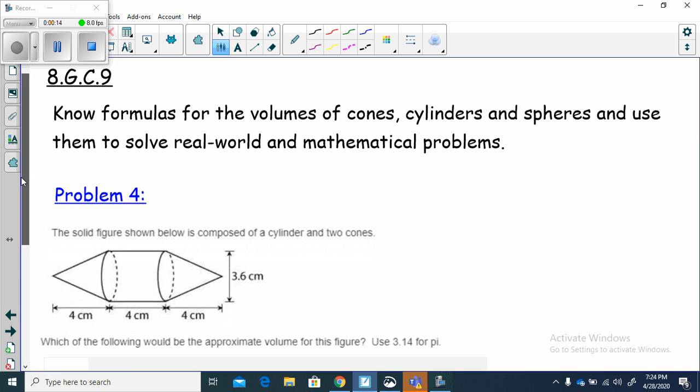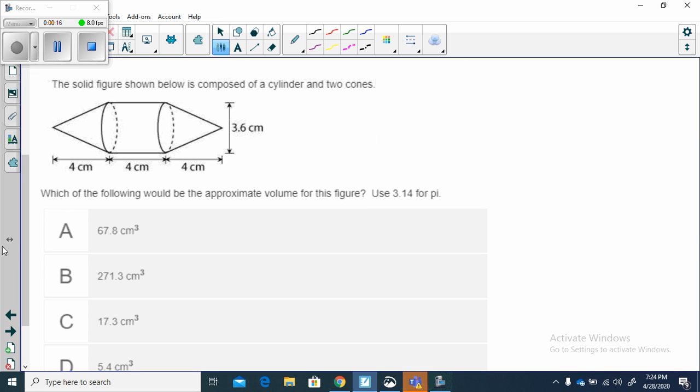Let's see what they're asking us. The solid figure shown below is composed of a cylinder and two cones. Which of the following would be the approximate volume for this figure? Use 3.14 for pi. So we are looking for the approximate volume, and we're going to use 3.14 for pi.